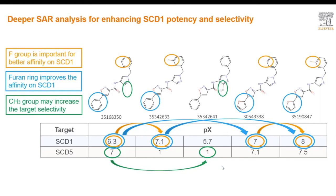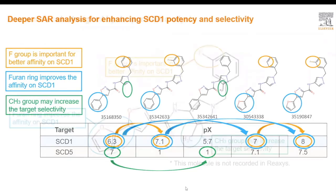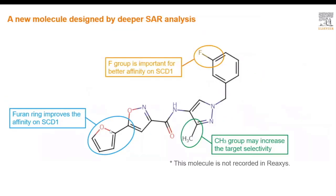The cumulative effect of the analysis of these compounds allows us to design a novel compound that is not in REACSIS, that contains the fluorine, methyl, and furan ring groups, which should allow us to design a molecule which has high levels of SCD1 activity and high levels of selectivity against SCD5.